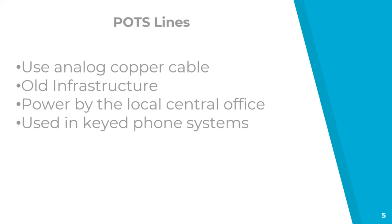Another common use for POTS lines in our industry is alarm lines. The nice thing about using a copper line for an alarm line is it gets its power from the local central office. So if power is cut to the building, that telephone line still has power going to it, meaning the alarm will still go off. We've also seen a switch from those to cellular networks, using a cellular connection and a universal power supply for backup. The last common use is elevators, which are similarly making the switch to cellular with an on-site power backup. That covers POTS lines — they're old traditional cables that come into your business and provide a dial tone.